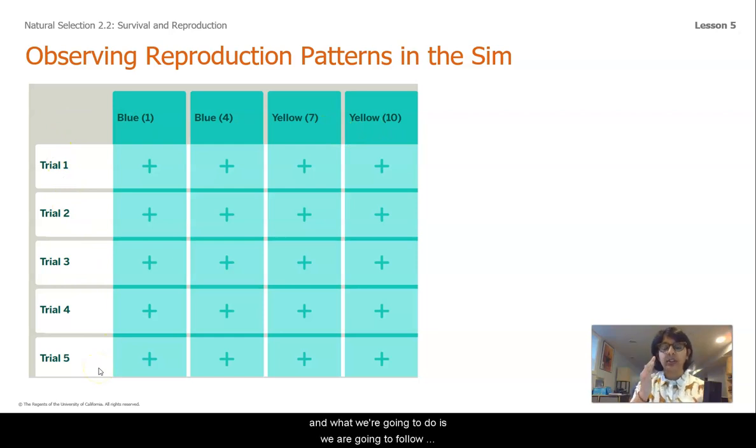And what we're going to do is we are going to follow ostrilopes with this particular color and we're going to count how many times they reproduce while we're watching the simulation. And that will give us some evidence as to which ostrilope colors may reproduce more or less than others. So go ahead, take a minute with your pen or pencil and copy down this data table so that we will have a space to record our data.